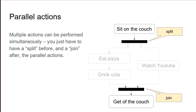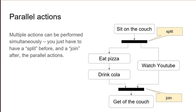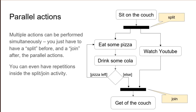Parallel actions. In the introductory example, there were some actions where the order didn't matter and they could even be performed at the same time, in parallel. Here I have my evening ritual: I sit on the couch, and then I split my actions between watching YouTube and eating pizza and drinking cola. Note that I can only drink cola when I'm finished eating pizza. Also note the join — I can only get off the couch when I've eaten all the pizza, drunk all the cola, and watched all of YouTube. So all actions going into a join have to finish before the process can continue after the join.